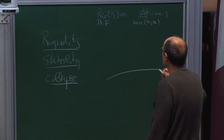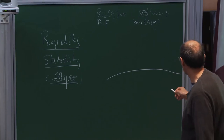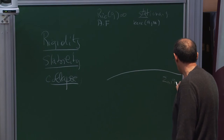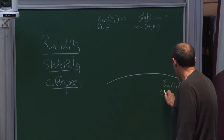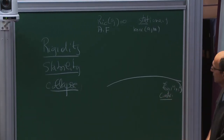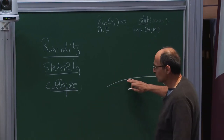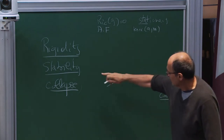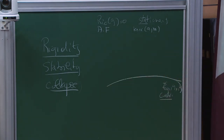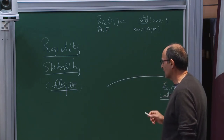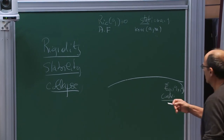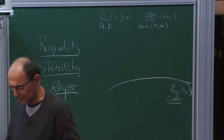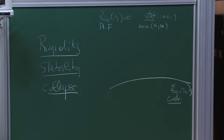Everything here can be viewed from the point of view of the initial value formulation. You start with initial data E0, K0 verifying the constraint equations. In stability, you make small perturbations of a Kerr solution and wonder whether those perturbations will destroy the original solution. In collapse, you start with initial data free of trapped surfaces and form a trapped surface in the future. As discussed last time, trapped surfaces are a very good substitute for black holes.